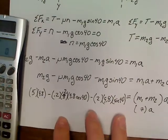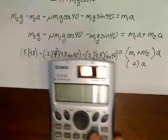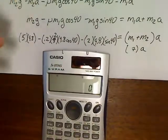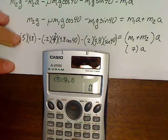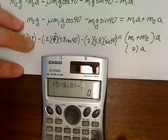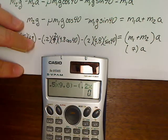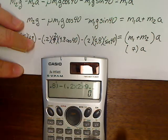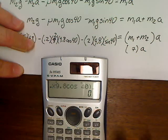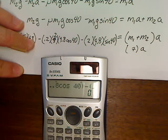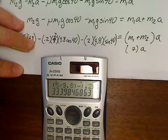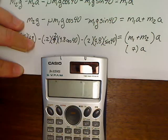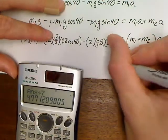So, let's plug this in and see what we get. I wasn't even going to, but I'm kind of curious as of right now. So, plug in this whole string, 5 times 9.8 minus 0.2 times 2 times 9.8 cosine 40 minus 2 times 9.8 times sine 40 equals divided by 7, 4.77.